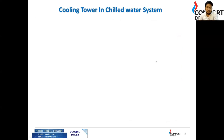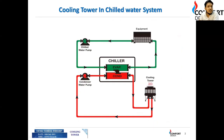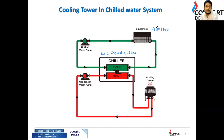In a chilled water system, the cooling tower is used when the chiller is a water-cooled chiller. On the evaporator side, this is connected with the AHU and FCU — air handling units and fan coil units. At the condenser side, the heat developed at the condenser is cooled by the cooling tower.